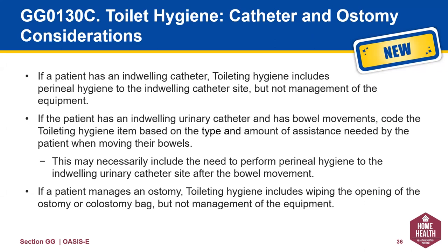In 130C, we are asked to consider the impact of indwelling catheters and ostomies. If a patient has an indwelling catheter, toileting hygiene includes perineal hygiene to the indwelling catheter site, but not management of the equipment. If the patient has an indwelling catheter and has bowel movements, code the toileting item based on the type and amount of assistance needed when moving their bowels. This may necessarily include the need to again perform perineal hygiene to the indwelling catheter site. If the patient manages the ostomy, toileting hygiene includes wiping the opening, but not management of the equipment.